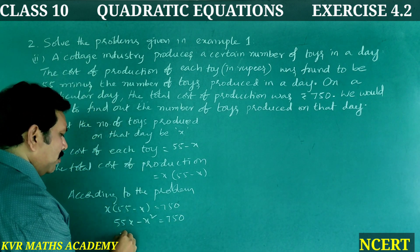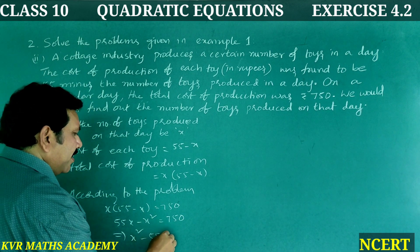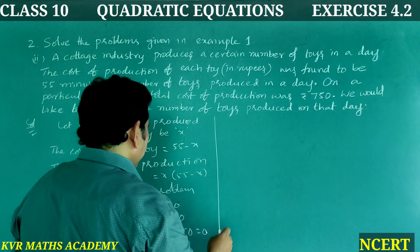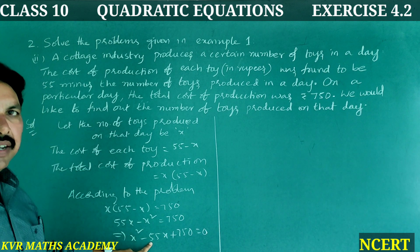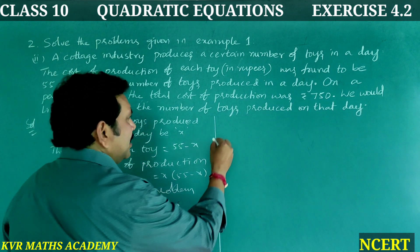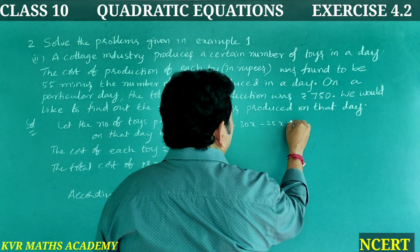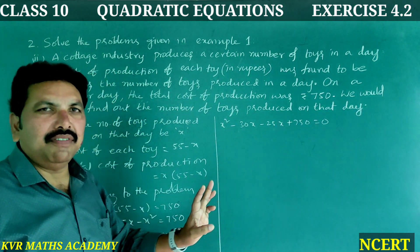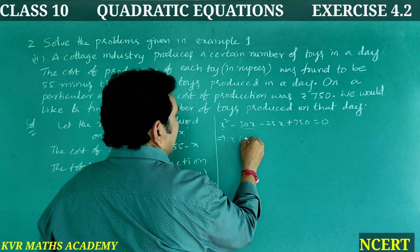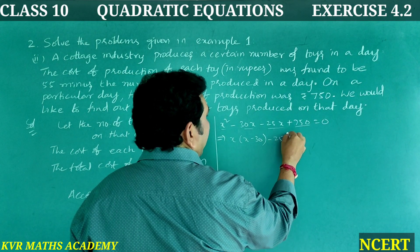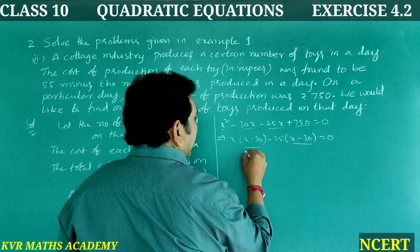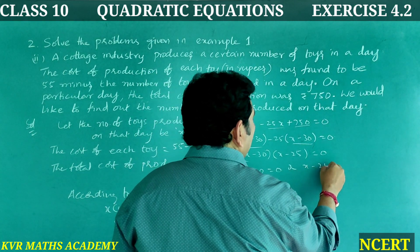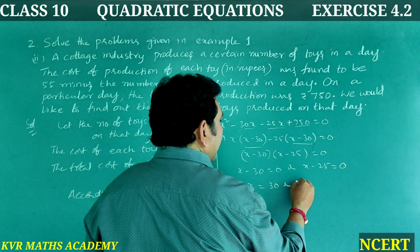That implies x squared minus 55x plus 750 equals 0. Finding factors of 750 that add to 55: 30 and 25. So x squared minus 30x minus 25x plus 750 equals 0, giving x(x minus 30) minus 25(x minus 30) equals 0, so (x minus 30)(x minus 25) equals 0. Therefore x equals 30 or x equals 25.